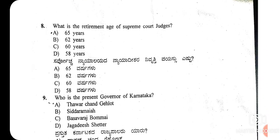Question number 8: what is the retirement age of a Supreme Court judge? The retirement age of a Supreme Court judge is 65 years. The retirement age of a High Court judge is 62 years — earlier it was 60, and it was increased to 62 after the 15th Constitutional Amendment according to Section 4 of the Indian Constitutional Act 1963.